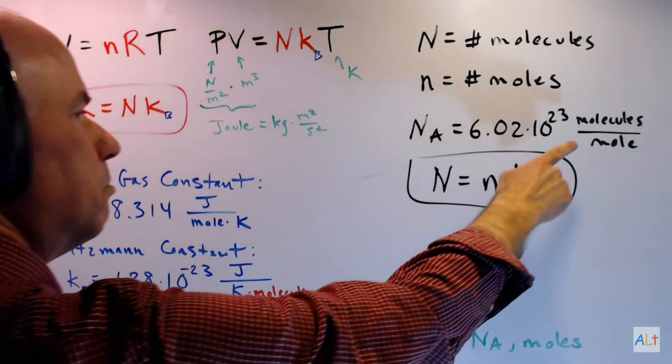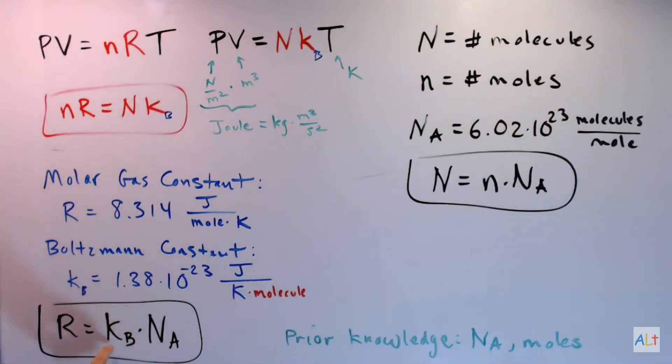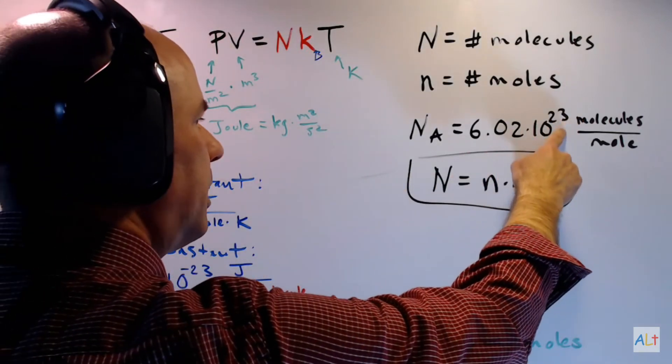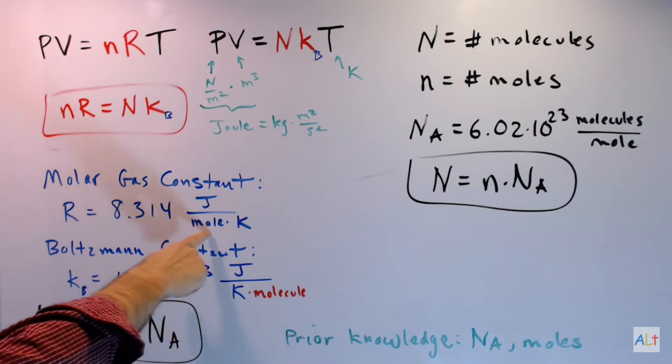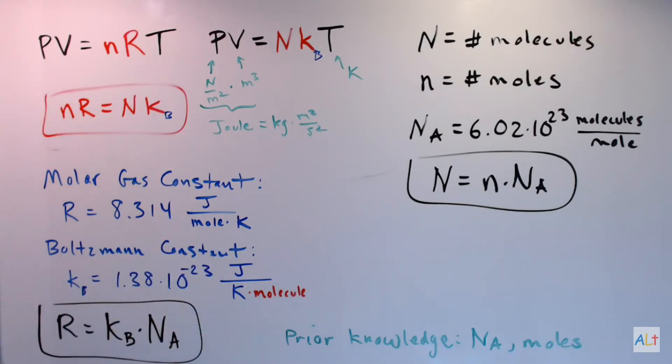Here's Avogadro's number: molecules per mole. Multiply it by the Boltzmann constant. The molecules in the denominator cancel the molecules and you're left with moles in the denominator. And there it is in the molar gas constant. But that's not the standard way that it is done.